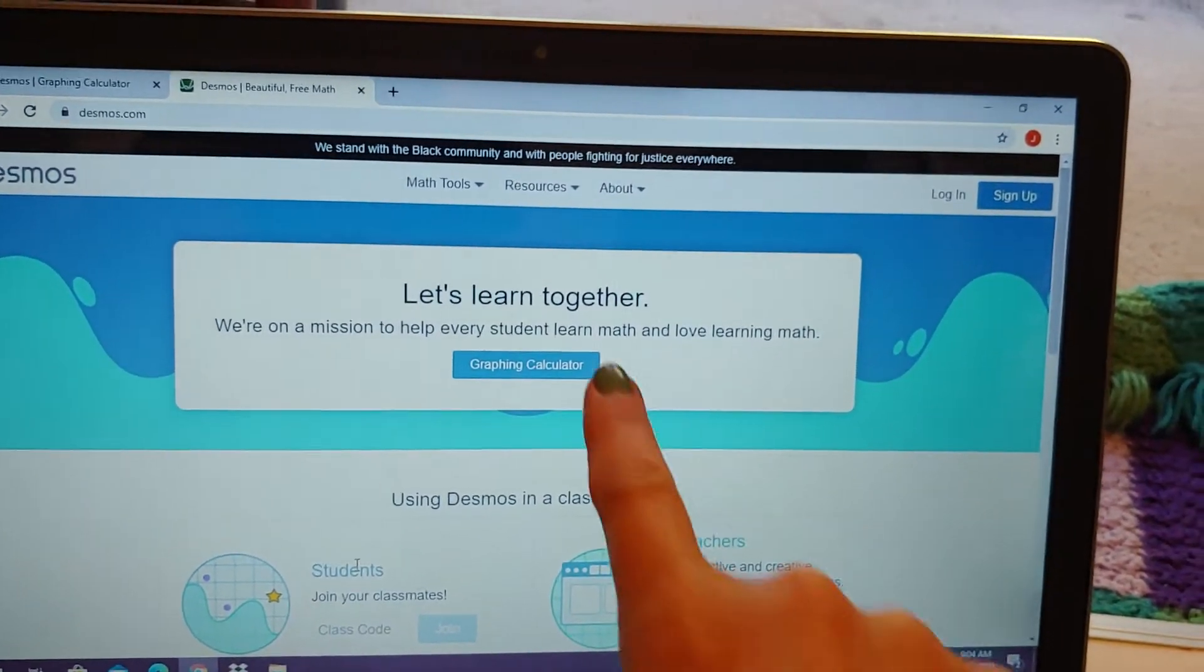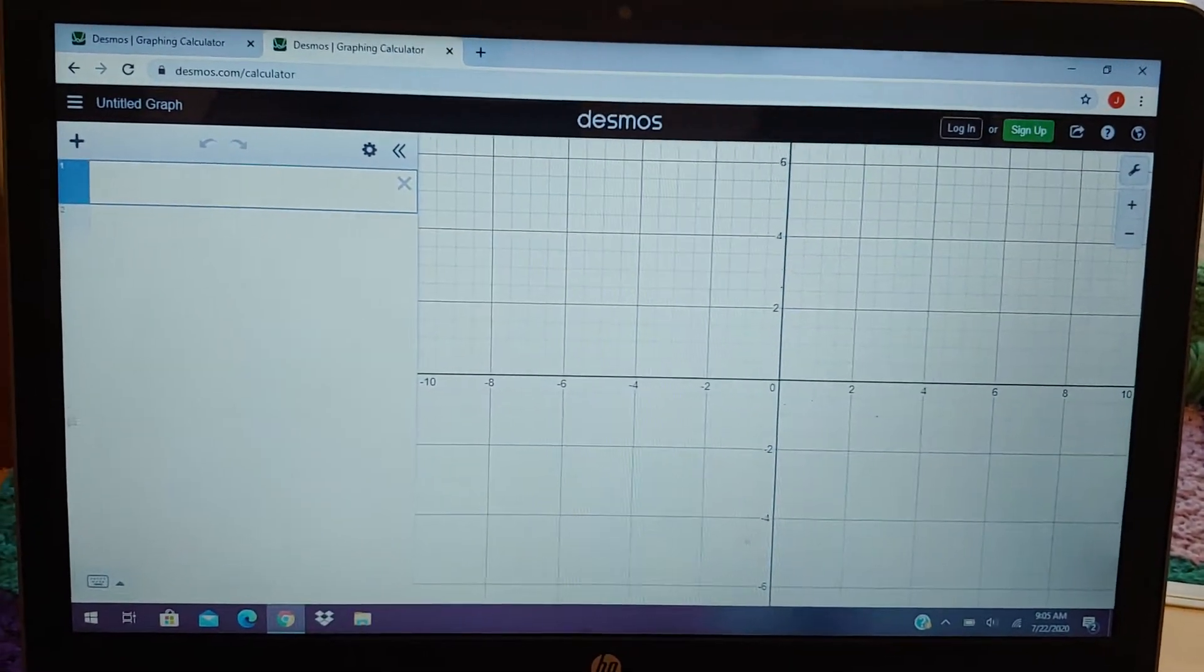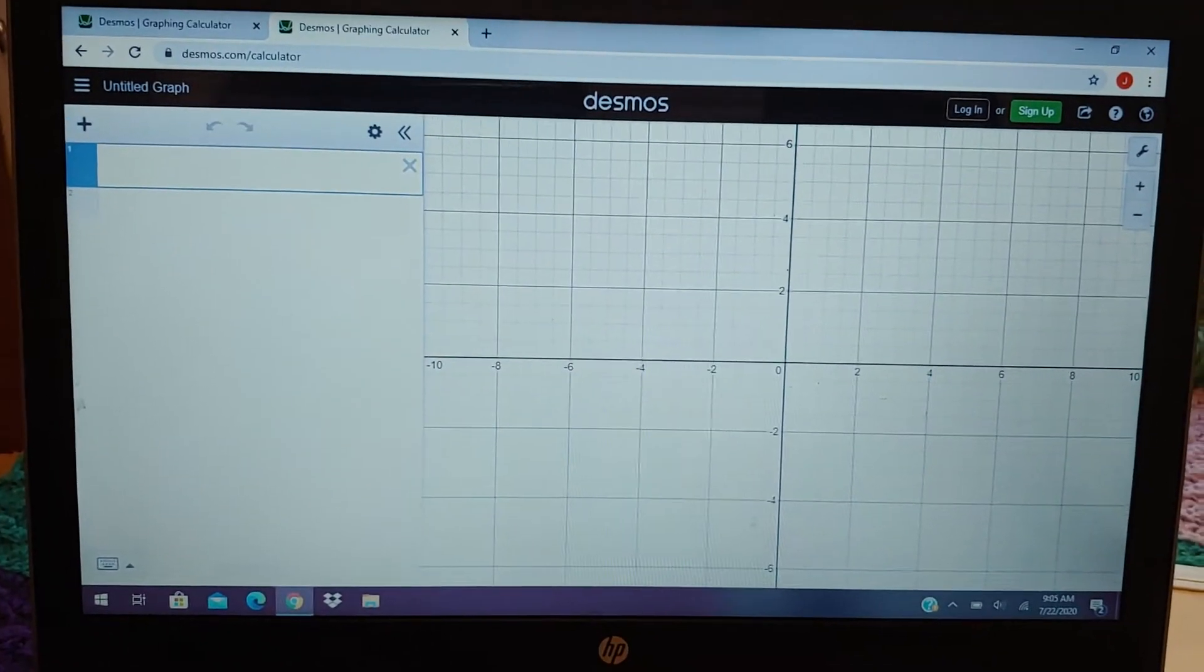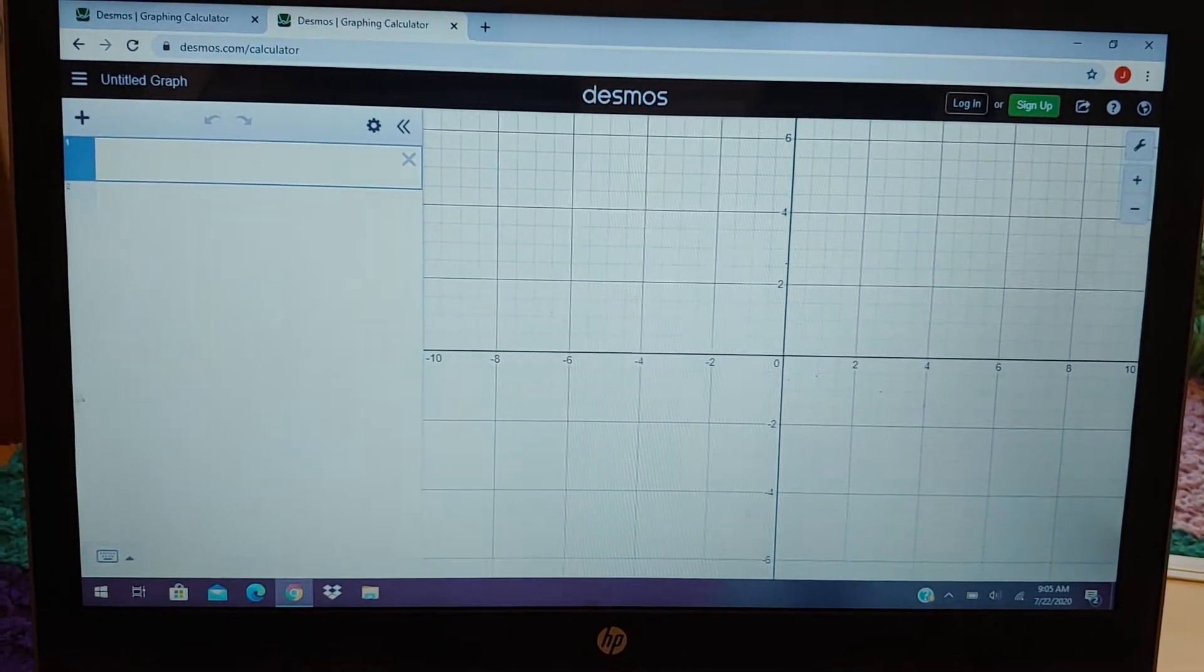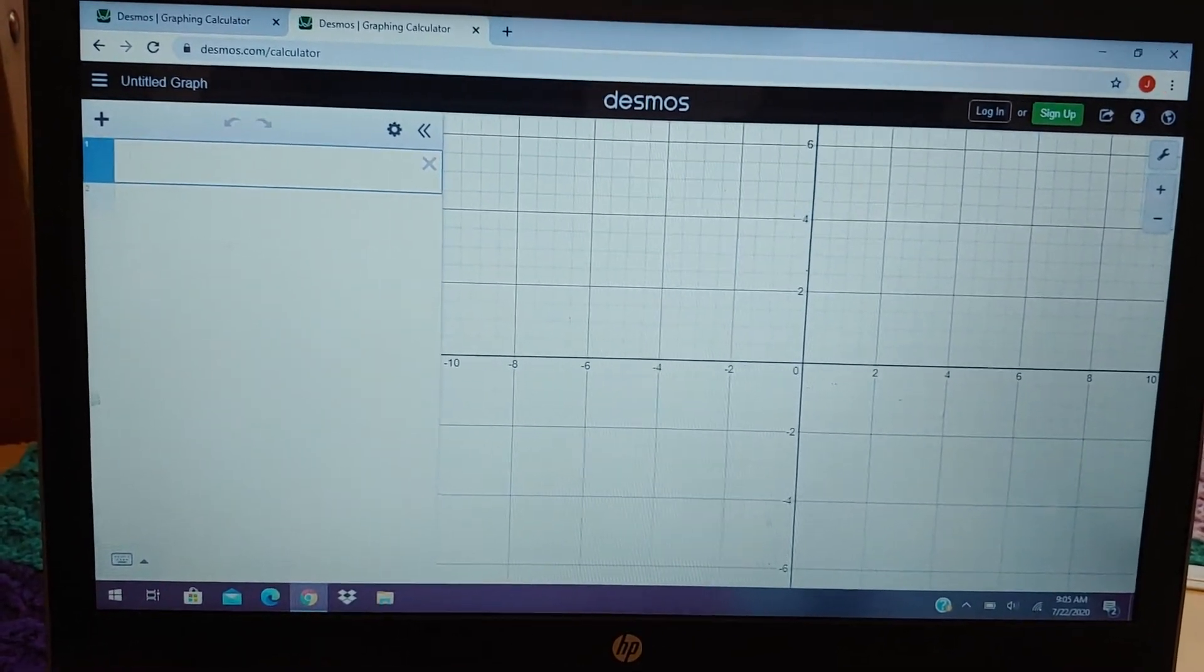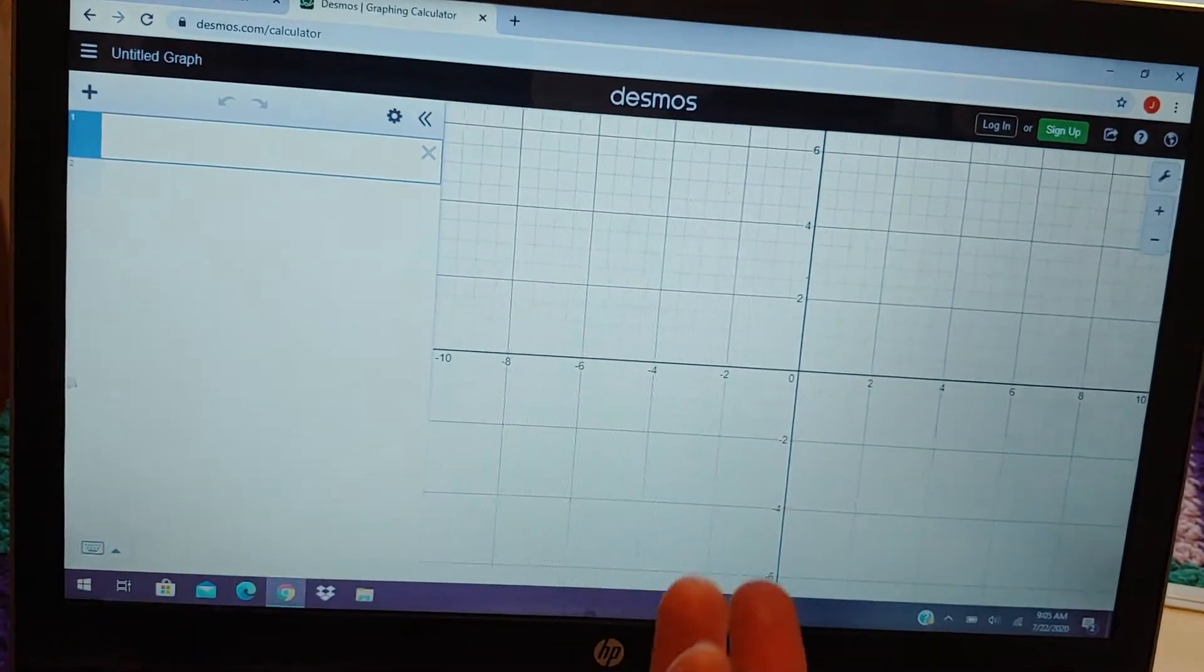When I click on graphing calculator, what pops up is this. Now what I'm going to be doing is graphing a parabola. I already actually went ahead and entered it in. So you can just type it in here, y equals with x's.